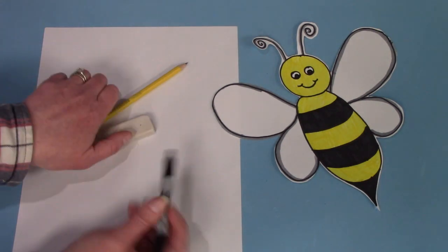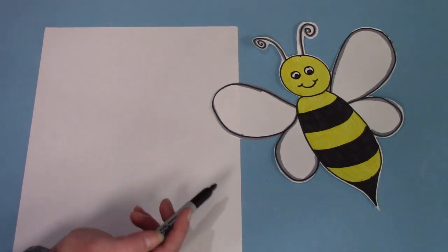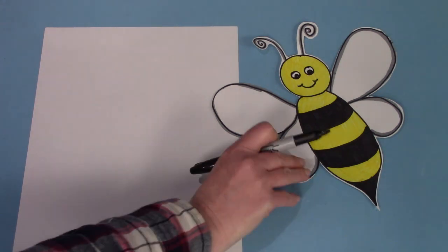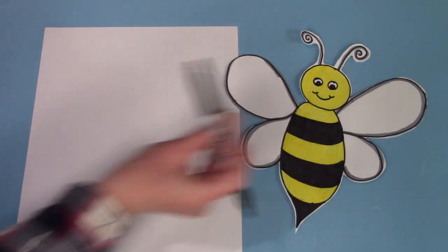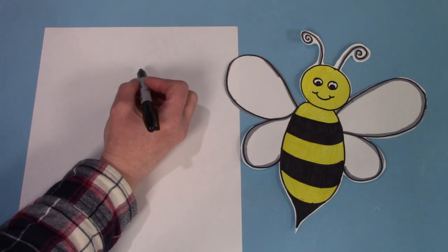I'm going to use a marker while I draw so that you can see it. I'm going to start off with our bee's head. Do you see what shape that is? It's a circle.